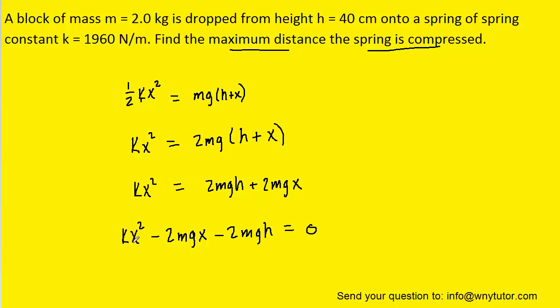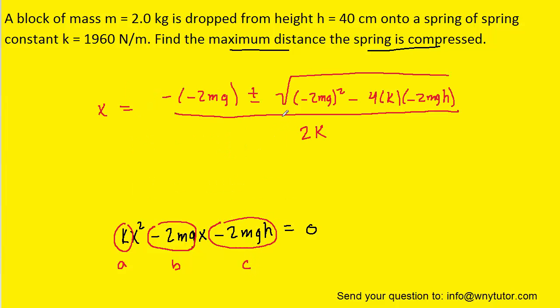We'll now have to use the quadratic formula to solve for x. Note that the a would be k, the b value would be the term in front of x, so we have negative 2mg, and then c would be this term right here. We've got the quadratic formula set up here, you might want to pause the video to make sure it makes sense.